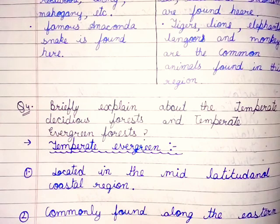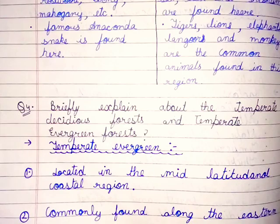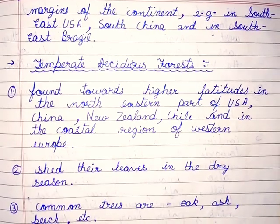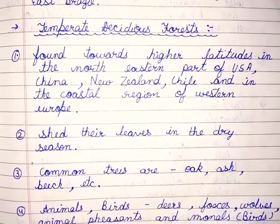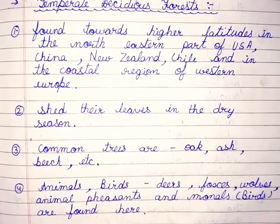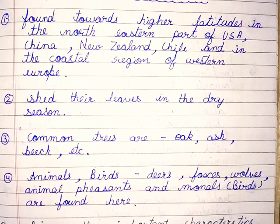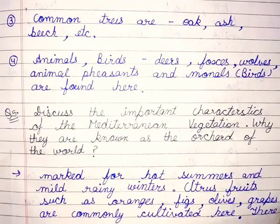Question number 4: briefly explain about the temperate deciduous forest and temperate evergreen forest. Temperate evergreen forests are located in the mid-latitudinal coastal region, commonly found along the eastern margins of the continent — for example, in southeast USA, south China, and southeast Brazil. Temperate deciduous forests are found towards higher latitudes in the northeastern part of USA, China, New Zealand, and in the coastal regions of western Europe. They shed their leaves in the dry season. Common trees are oak, ash, beech, etc. Animals such as deer, foxes, wolves, and pheasants and monals are found here.